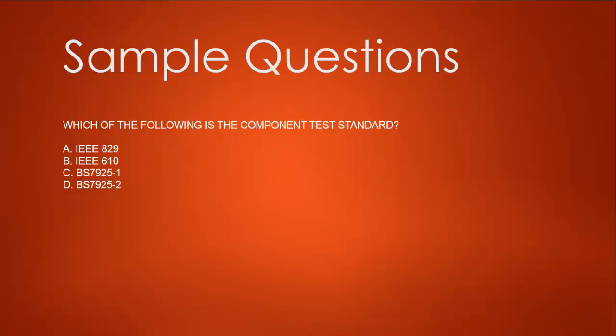I want you to Google these four standards and learn about them, because this question is often twisted and repeated in many exam simulations — not just in ISTQB, but also in the British testing exam or ISEB. Go through these documents and know exactly what these standards cover. The answer is BS 7925-2, which is the component testing standard. So the answer is D.